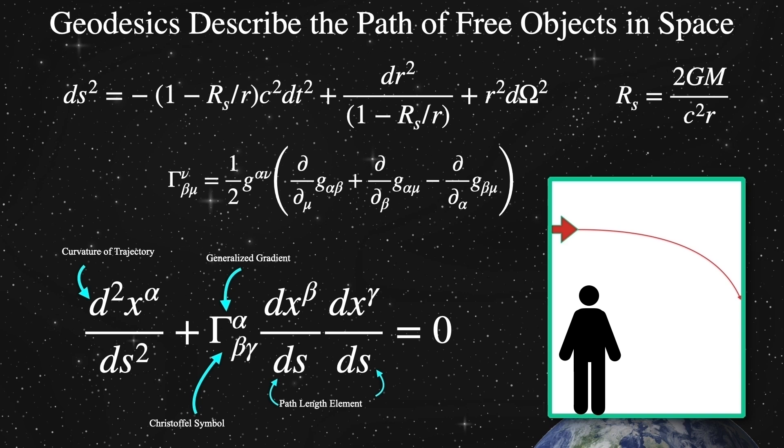We can construct interesting mathematical tools out of the metric, such as gamma, which has the formal title of a Christoffel symbol. It's composed of partial derivatives with respect to each of the coordinates of spacetime. This symbol actually represents a large system of equations and encodes the gradient of the spacetime. Just like a topological map of a mountainous hiking area shows a series of points of altitude, the slope or gradient of the mountain at a given point is determined by how close together the lines of the same height are placed on the map. The Christoffel symbols encode the points of the metric into the gradient of spacetime.